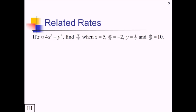So if z equals 4x cubed plus y squared, they want us to find dy over dt, which is interesting because there's no t's here, when x equals 5, dx over dt equals negative 2, y equals one half, and dz over dt equals 10.